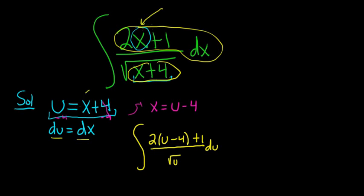So you take this equation and you solve it for x, subtracting 4 from both sides. So you get x equals u minus 4. So you just take the x and you plug it in. So it becomes u minus 4. That's your u minus 4.